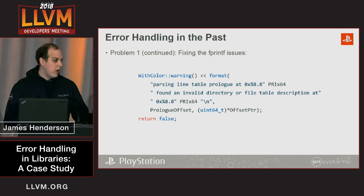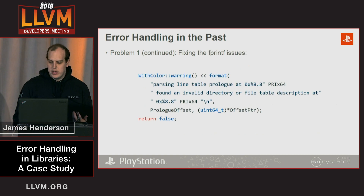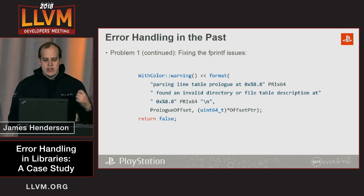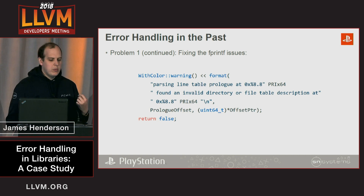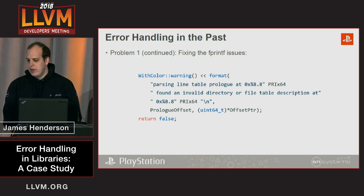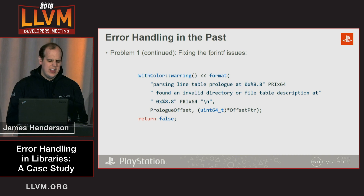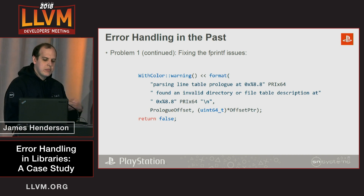This can be fixed easily enough by using the WithColor warning functions and similar, and that's what happened around the time I was doing this work. However, this still doesn't handle the case of what if we want to treat this warning as an error — this is forcing the user's error handling.